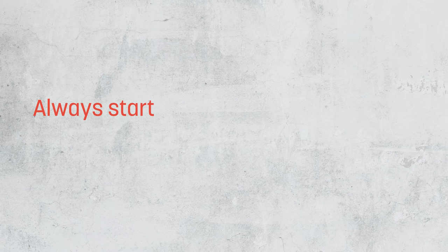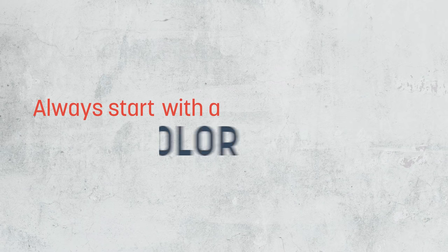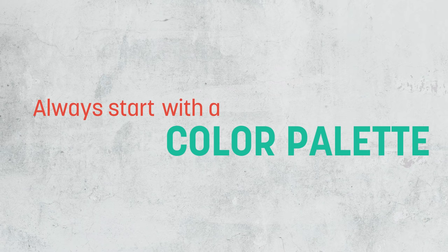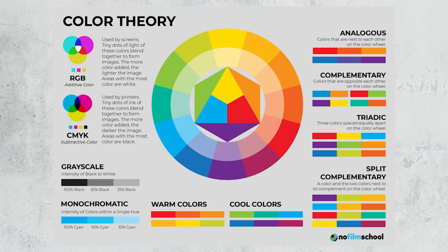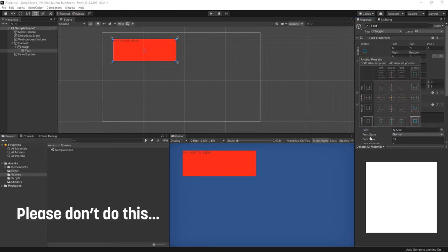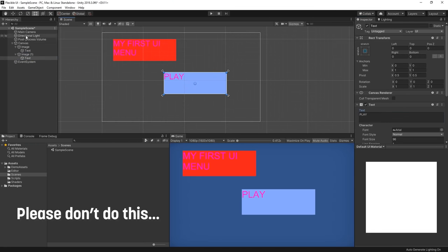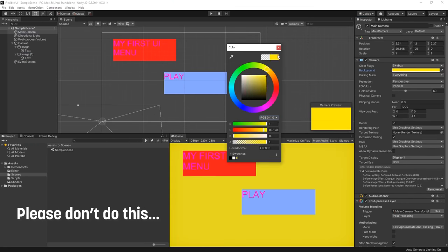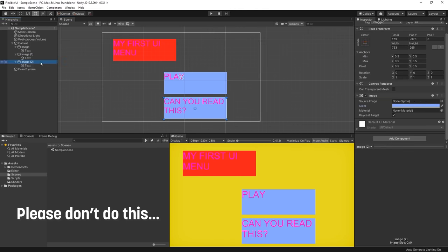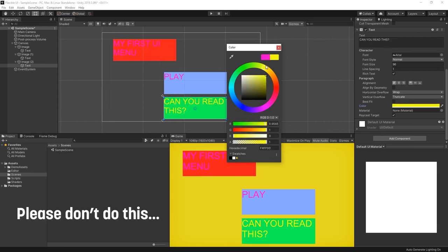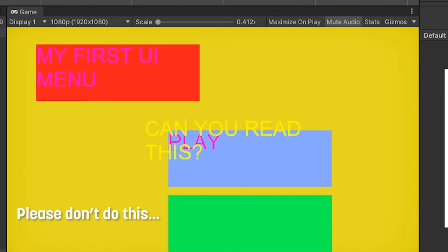Before I get started designing a UI for my game, I like to think about the specific colour palette I'm going to use. Regardless of the style you go for, you need to understand some basic colour theory if you want it to look good. Do not just randomly select colours for different elements and mishmash them together hoping for the best — this is one of the easiest ways to design an absolutely terrible user interface.